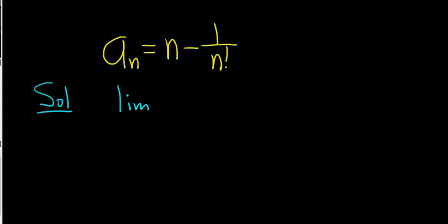So we start by taking the limit. If we get an answer, if we get a number, then the sequence converges and the number we get is called the limit. If we get DNE or infinity or negative infinity, then it diverges.